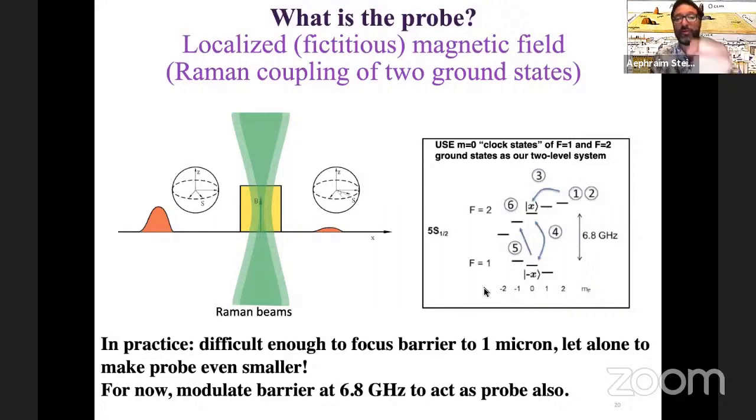That way, only while the atoms are inside the barrier do they see this pair of beams, and they get driven between two hyperfine states of the atom, the f equals one m equals zero, and the f equals two m equals zero, which we use for the same reason that these are used in atomic clocks, which is that they're highly insensitive to background magnetic fields and noise, and that's what allows us to do these very small rotations and measure precisely the rotation angle.